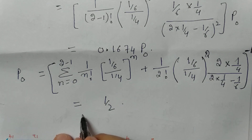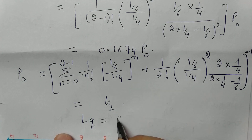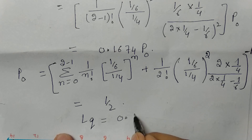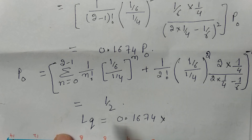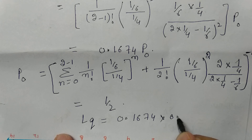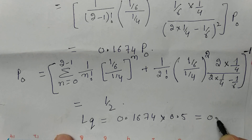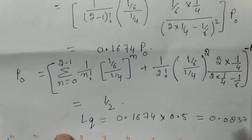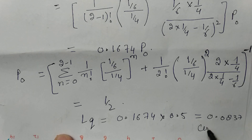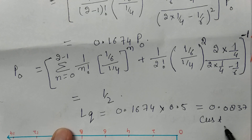Putting the value of P0 equals 1/2 into the Lq expression: Lq equals 0.1674 × (1/2) equals 0.0837 customers. That is, the expected number of customers waiting in the queue is approximately 0.0837 customers.